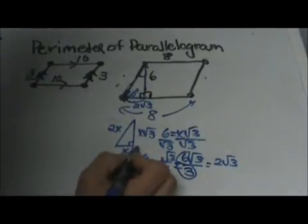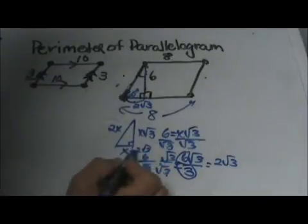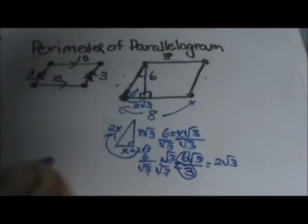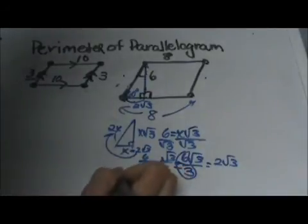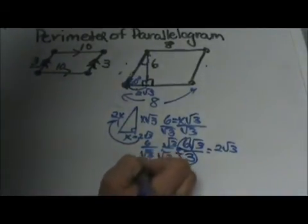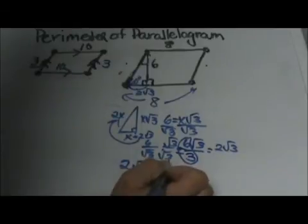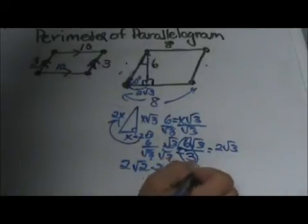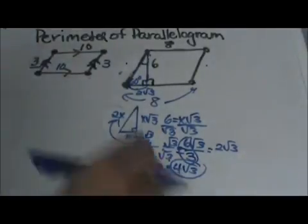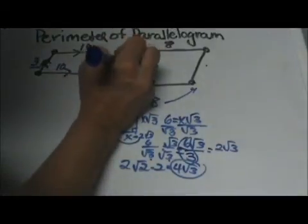Now remember the 30-60-90 rule says that I can double that to get the hypotenuse. So I take 2√3 times 2 and that gives me 4√3 for the hypotenuse. So I'm going to use 4√3 as this hypotenuse.